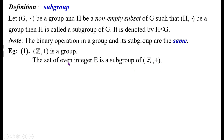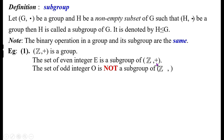Because the set of even integers, namely {0, 2, 4, 6, 8, 10, ..., -2, -4, -6, -8, -10, ...}, forms a group under addition. Since E is a subset of Z, therefore the set of even integers is a subgroup of the group (Z, +).